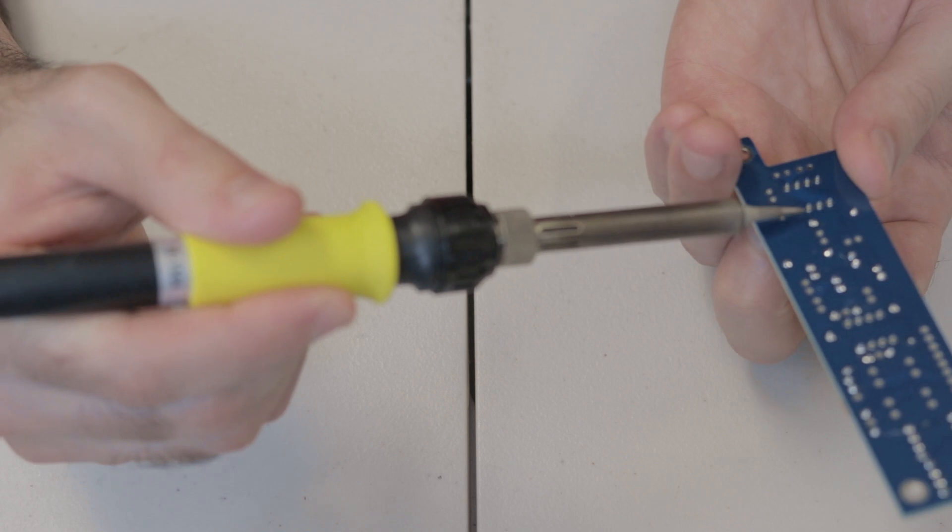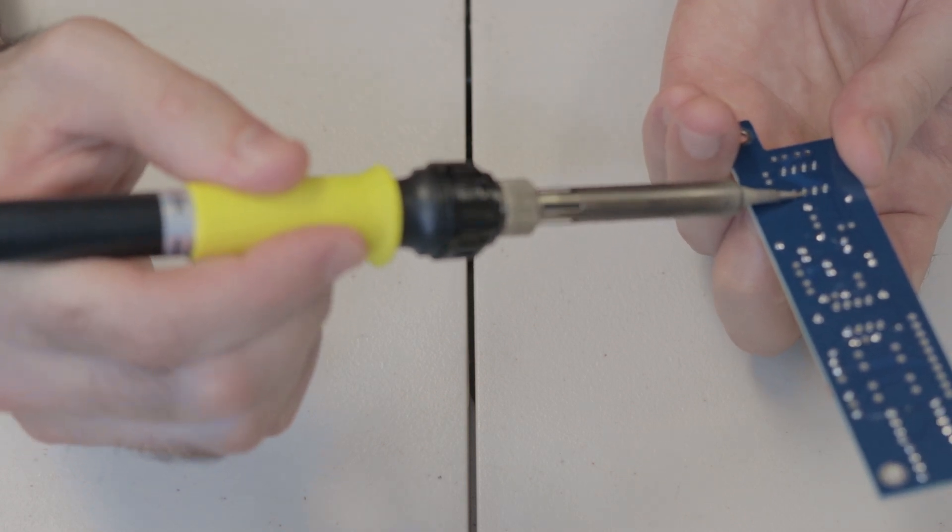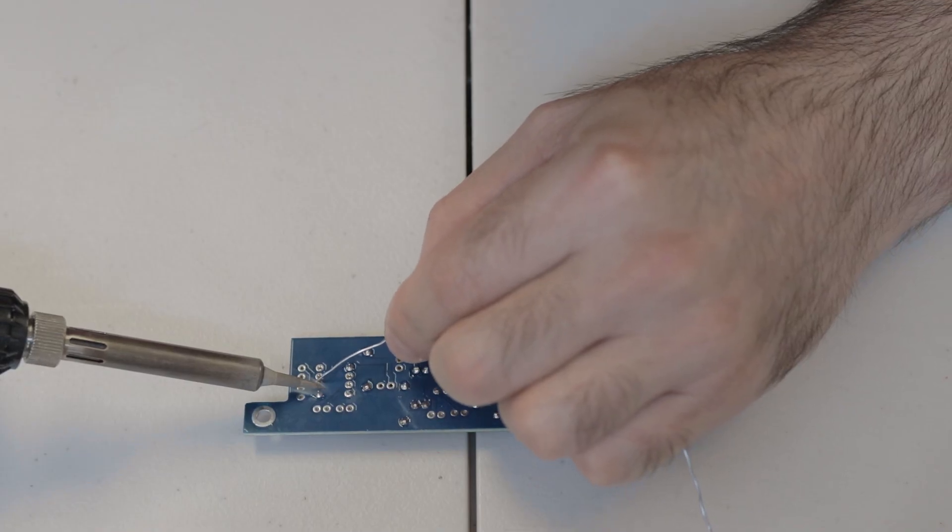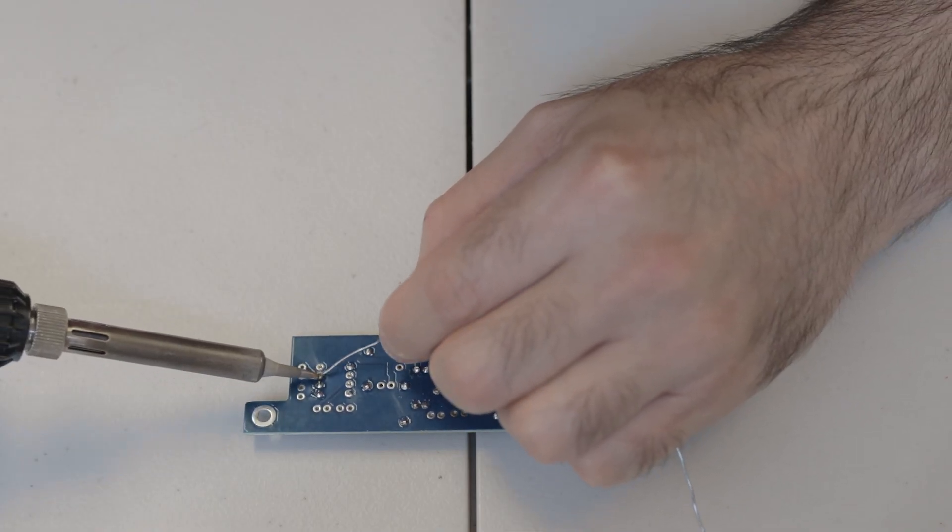And then what you do is once you've got them in the right orientation is solder one of those legs to hold it in place, just like with previous components and then check the orientation and it's nice and flat on the board and then solder the other legs.